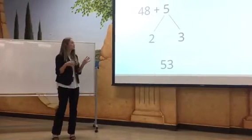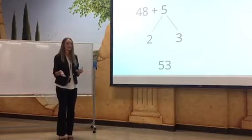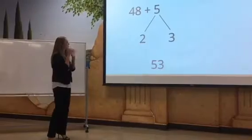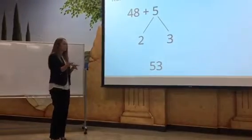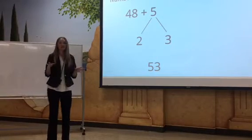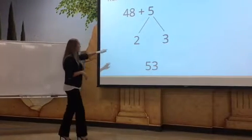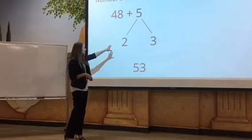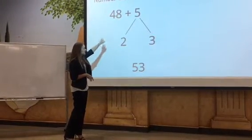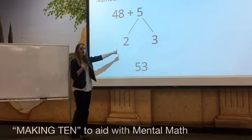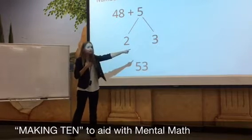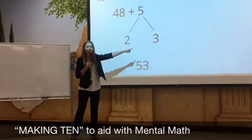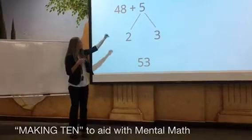They are what we call making ten in this problem. So if they have that foundation and they have those math facts, they can break five into two and three. Because they know that if I take two from five, I will make fifty. And I would rather add fifty and three in my head than I would add forty and five.